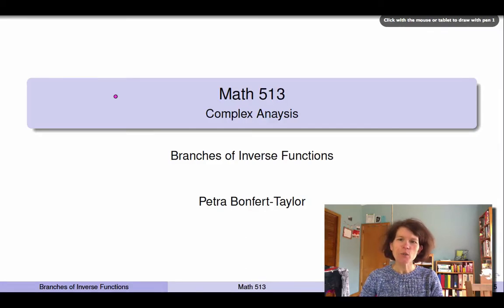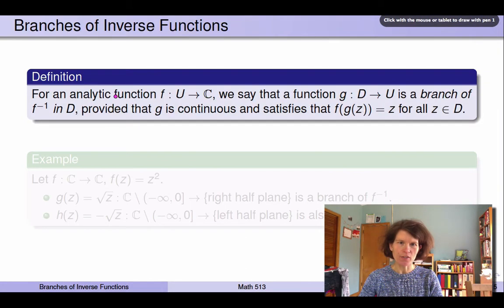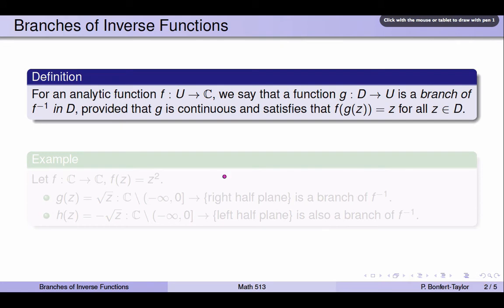In this lecture I'll tell you about branches of inverse functions. Here's a definition: given an analytic function f defined on some open set U, we say that a function g defined on another open set D, but mapping into U, is a branch of f inverse in D, provided that g is continuous and satisfies that f of g of z is z for all z.